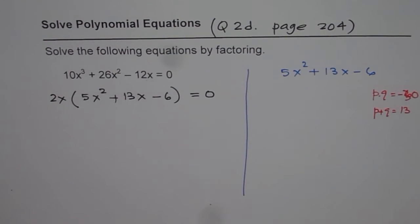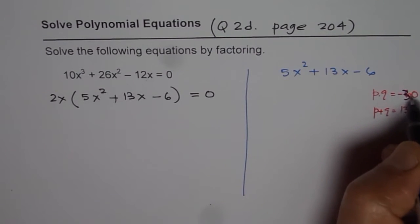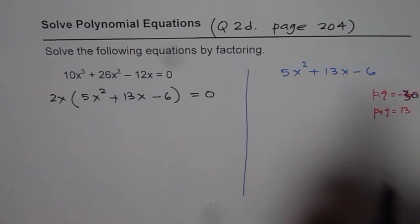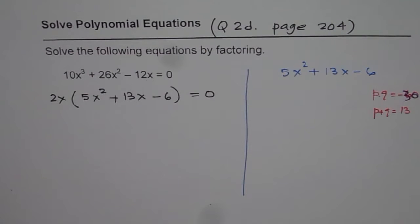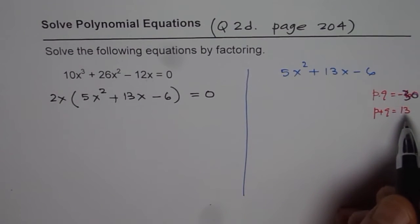So, the product is, let me rewrite this, 30 and the sum is 13, minus 13. So, the numbers are 15 and 2.